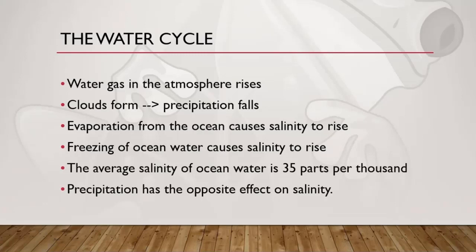As it rises, it cools then condenses back into a liquid form and it forms clouds. When the clouds get filled with water droplets, it begins to precipitate, and depending on the temperature in the atmosphere, the water droplets will fall to the ground in one form or state or another. As water evaporates from the oceans, or if the oceans freeze solid, the salt content or salinity of the ocean increases. The opposite is true when it precipitates or if the ice melts. The average salinity of ocean water is 35 parts per thousand, whereas in coastal waters, polar seas, and near the mouths of large rivers, the salinity is lower.